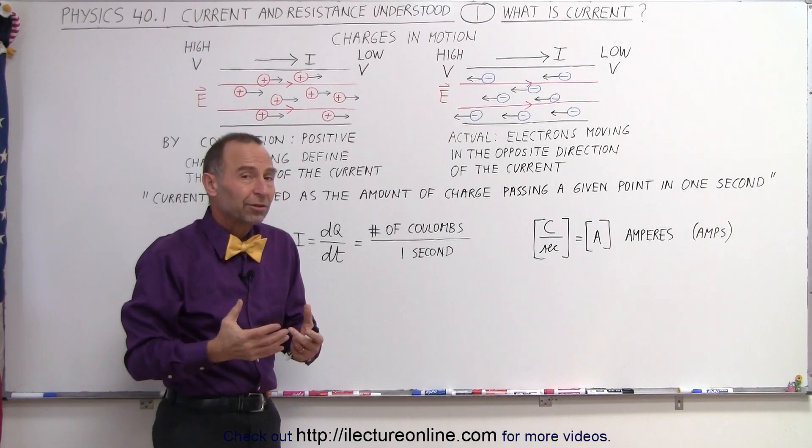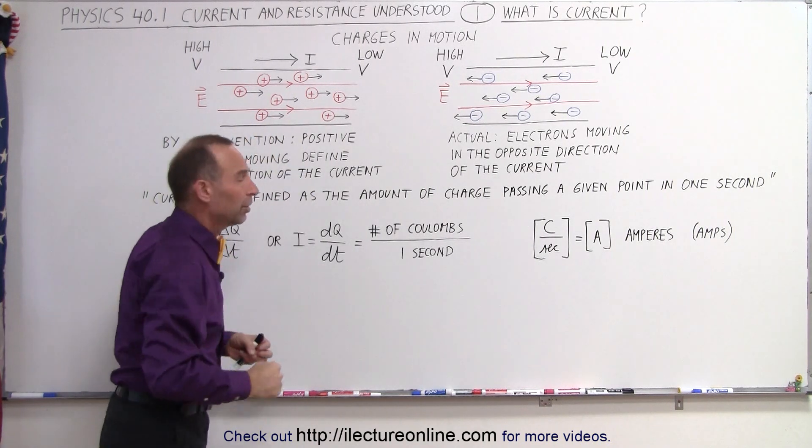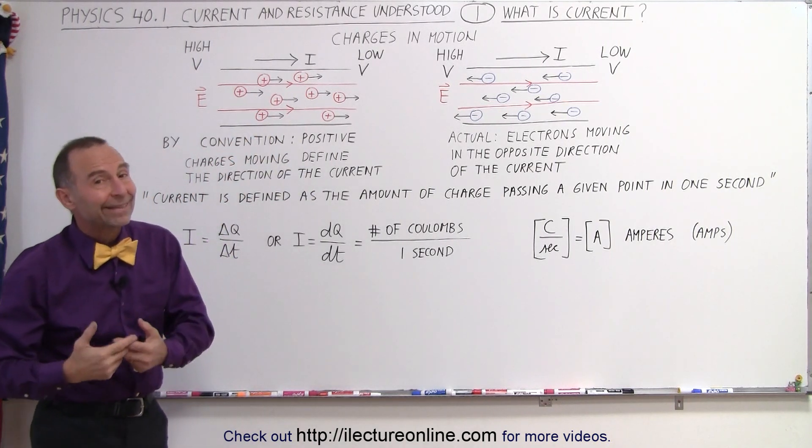So, how do we look at current? Again, we go by convention. We think of it as being positive charges moving through the conductor, when in actuality it's the negative charges.